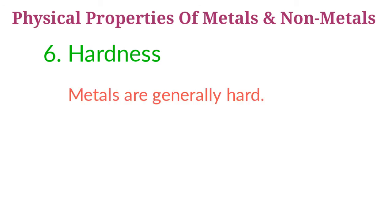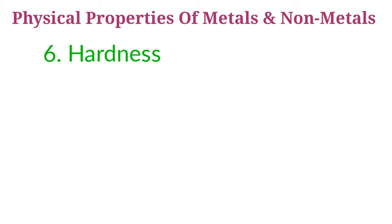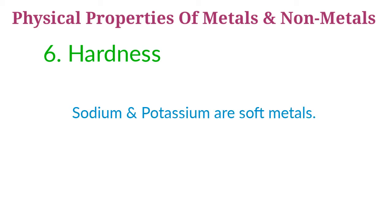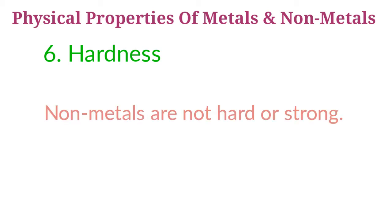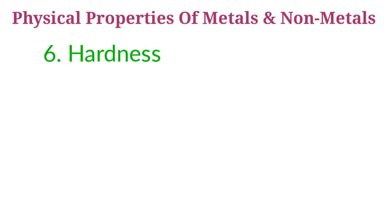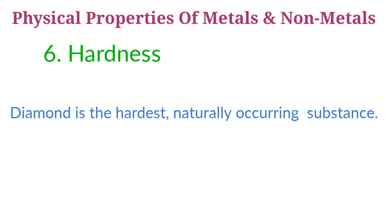Next property: hardness. Metals are generally hard. For example, iron metal is very hard and strong, so iron is used in the construction of bridges, railway lines, machines, etc. However, sodium and potassium are soft metals and can be easily cut with a knife. Non-metals are not hard or strong — they easily break when a large weight is put on them. Only diamond is the hardest naturally occurring substance.